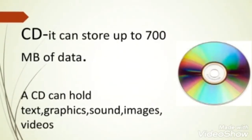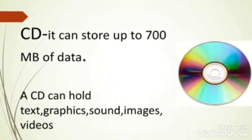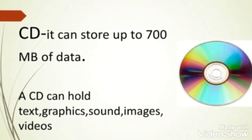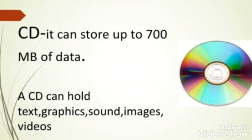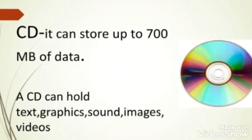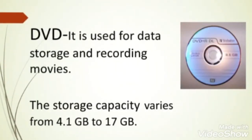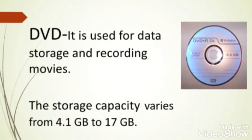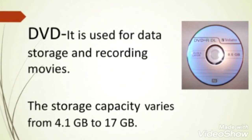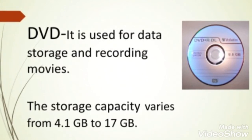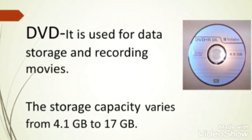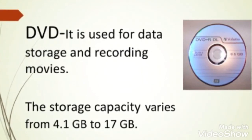The next storage device is CD. CD stands for Compact Disk. It is used to store text, graphics, sound, images, and video, and it can store up to 700 MB of data. Next is DVD. The full form of DVD is Digital Versatile Disk or Digital Video Disk. It is used for recording movies with high video and sound quality, and it can store up to 4.1 GB to 17 GB of data.